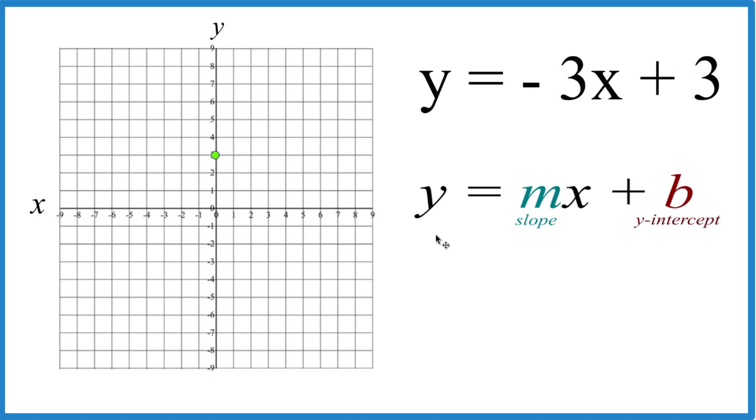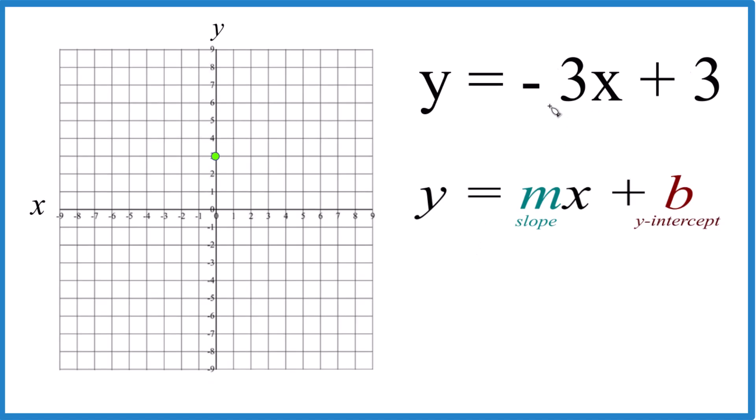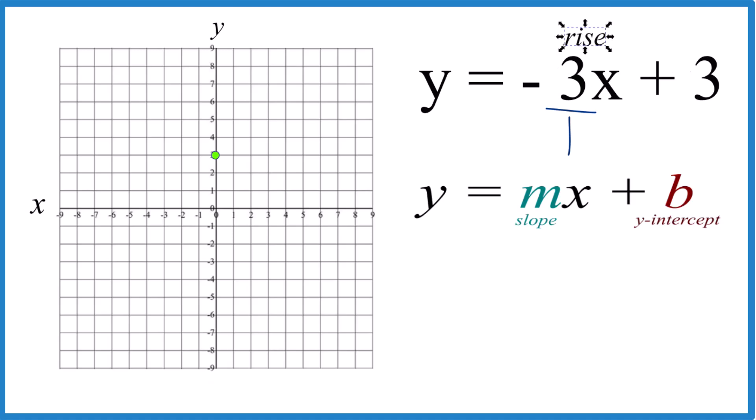For the slope, m, we have a negative 3, but it's helpful to think about that as 3 over 1, because that way we have negative 3 as our rise and 1 will be the run.